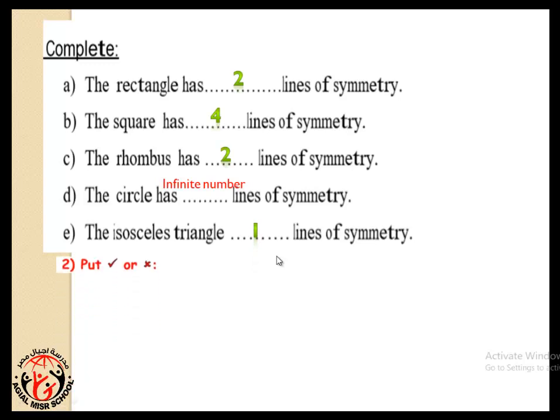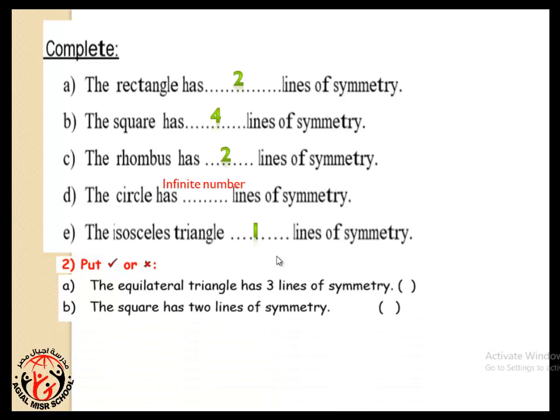Number two, write true or false. The equilateral triangle has three lines of symmetry. Who can answer? Yeah, true. Excellent. The square has two lines of symmetry. False. Excellent. The square has four lines of symmetry.